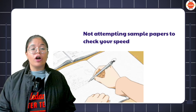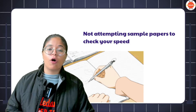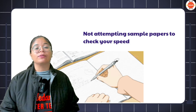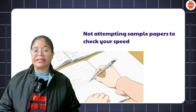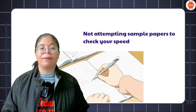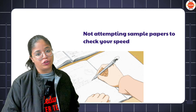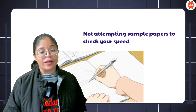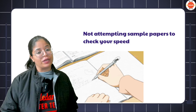Mistake number two: not attempting sample papers to check your speed. There are a lot of students who struggle with English exams because they can't maintain speed. So if you are one of those who needs to maintain speed, please start writing a sample paper every day and set a timer for 3 hours, so you can check whether your speed allows you to complete the paper in time.